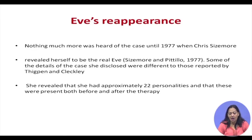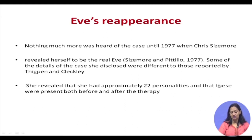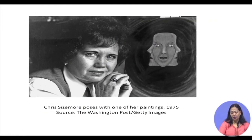After the movie, nothing was heard about Eve until 1977, when Chris Sizemore — the real Eve — reappeared. She revealed herself to be the real Eve, disclosed some other facts about herself, and wrote another book. She revealed that she had had 22 personalities in her lifetime — happening during and also after therapy. She mentions that she was helped by Thigpen and Cleckley, but they were not able to remove this illness from her.